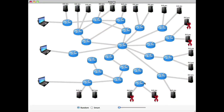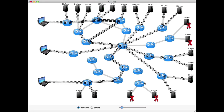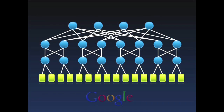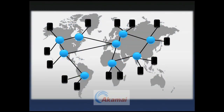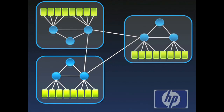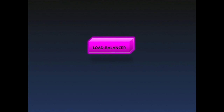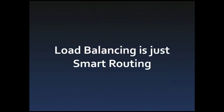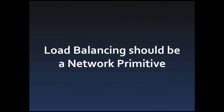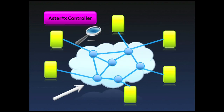Hi, my name is Nikhil Handigold. In this demo, I'm going to show you how OpenFlow has helped me transform my network into a distributed load balancing system. Today, load balancing is prevalent in almost all scale-out Internet services hosted in data center networks, CDNs, and enterprise networks. It is usually implemented using special expensive boxes called load balancing switches. Our observation is that load balancing is just smart routing, and given control over routing, our network itself should be able to do load balancing for us. Therefore, we believe load balancing should simply be a network primitive. We built a system called Asterix to demonstrate this idea.